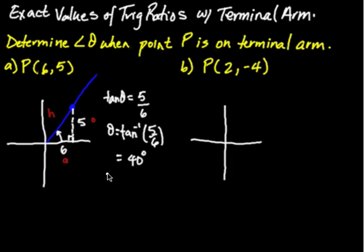Sometimes questions will ask you to find all three ratios: sine, cosine, and tangent. If I wanted to know sine, I would need to know the hypotenuse side. To find the hypotenuse, I can use Pythagorean theorem. 5 squared plus 6 squared equals the hypotenuse squared. So 25 plus 36 gives me 61, so the hypotenuse is root 61.